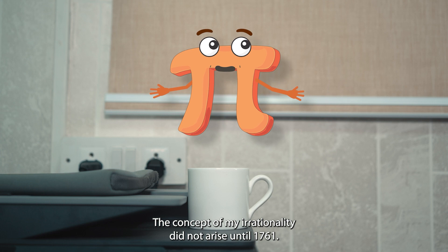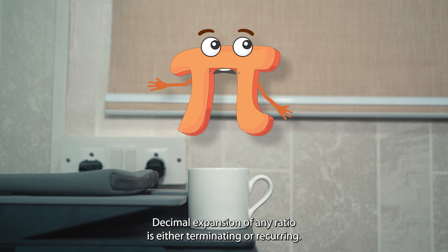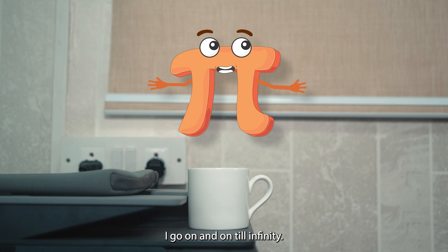Decimal expansion of any ratio is either terminating or recurring. But in my case, nobody could find an end. I go on and on till infinity. Can you really define me in the P by Q form?